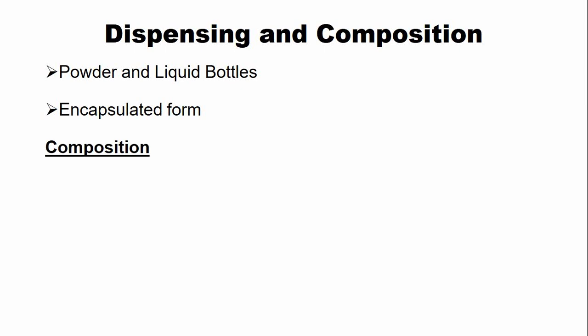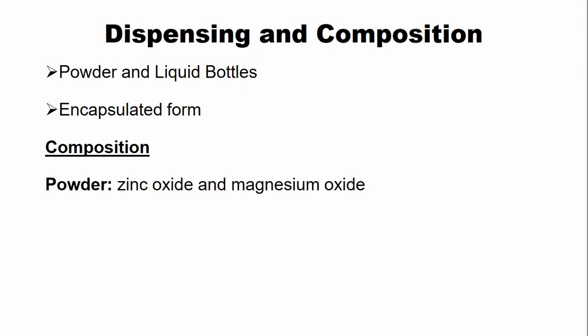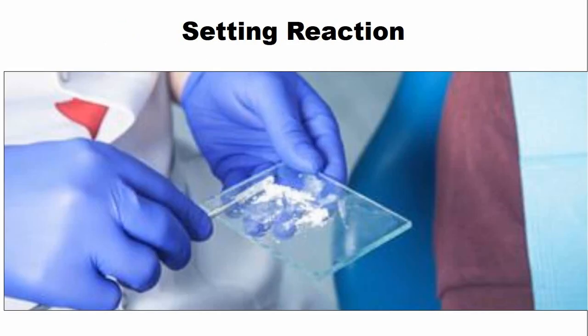The composition of the zinc phosphate dental cement: the powder component comprises zinc oxide, which is the main ingredient, mixed with a smaller amount of magnesium oxide. The liquid component comprises phosphoric acid and water. On mixing of the powder and the liquid, the setting reaction starts.